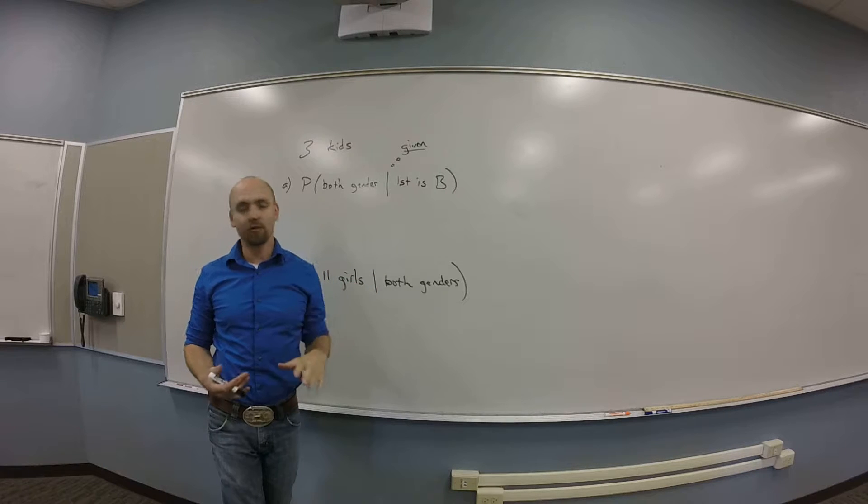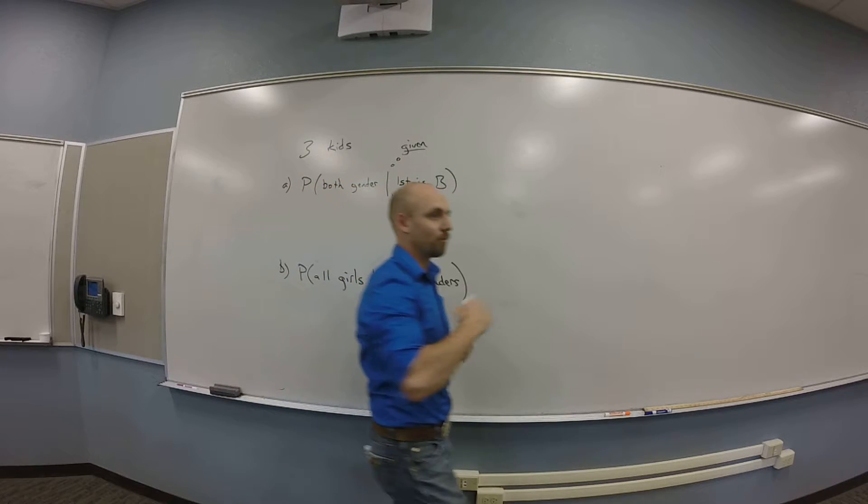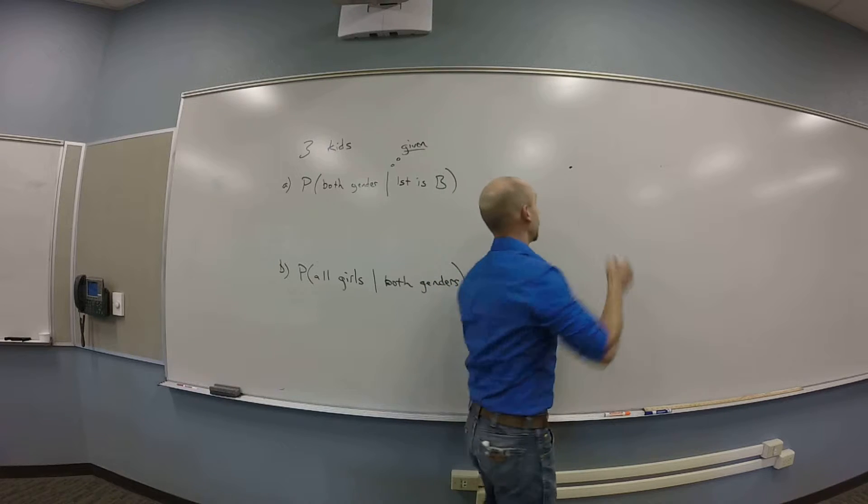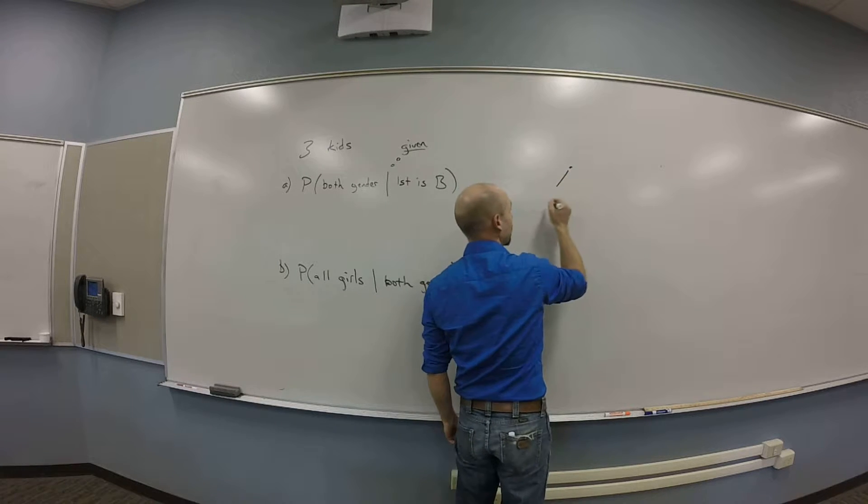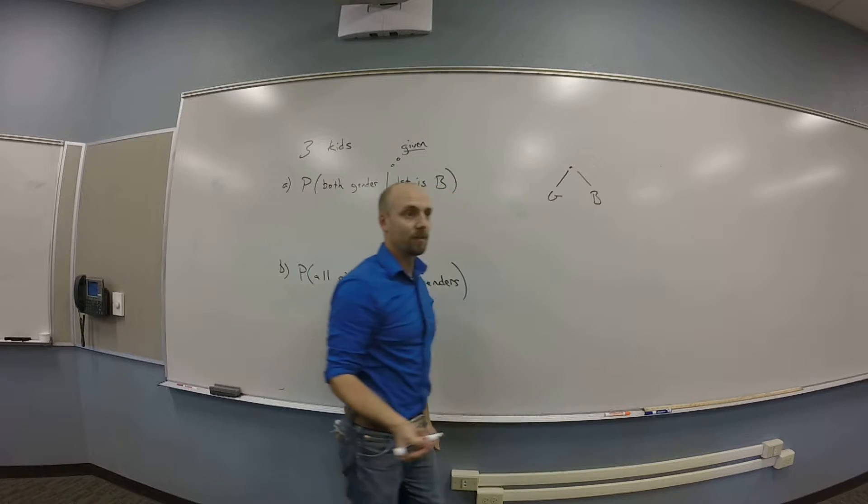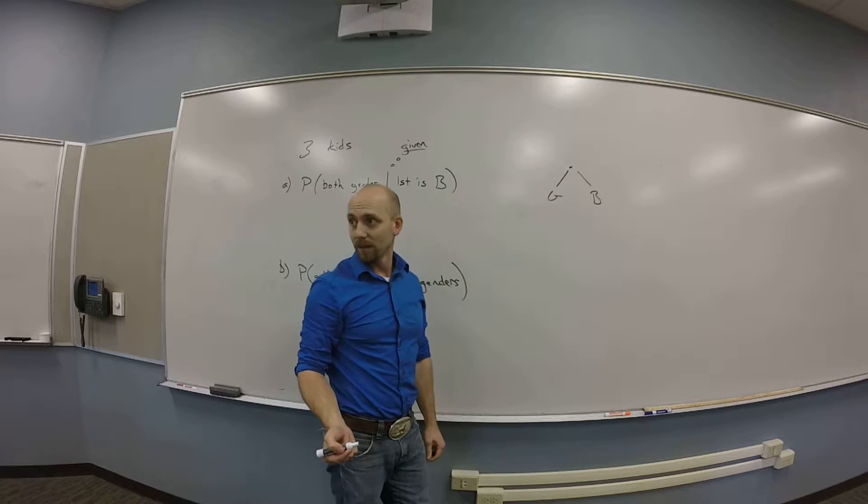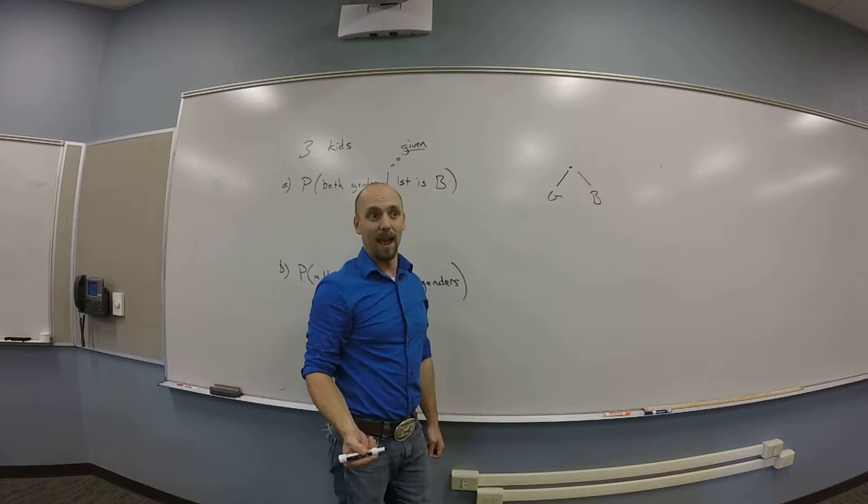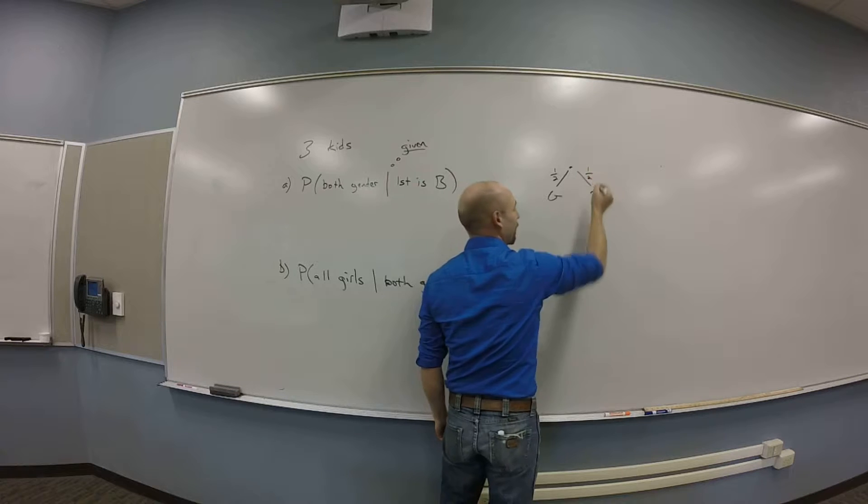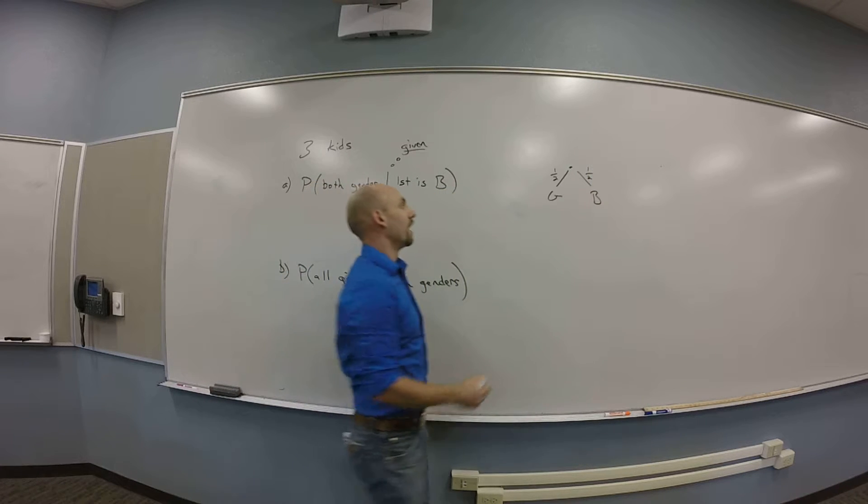So I'm going to tree this just for the first one, and then we'll probably not tree these later. But first things first, I have two options, right? Girl and boy for the first case. What's the branch weight? Yeah, the probability of a girl and the probability of a boy are each a half.